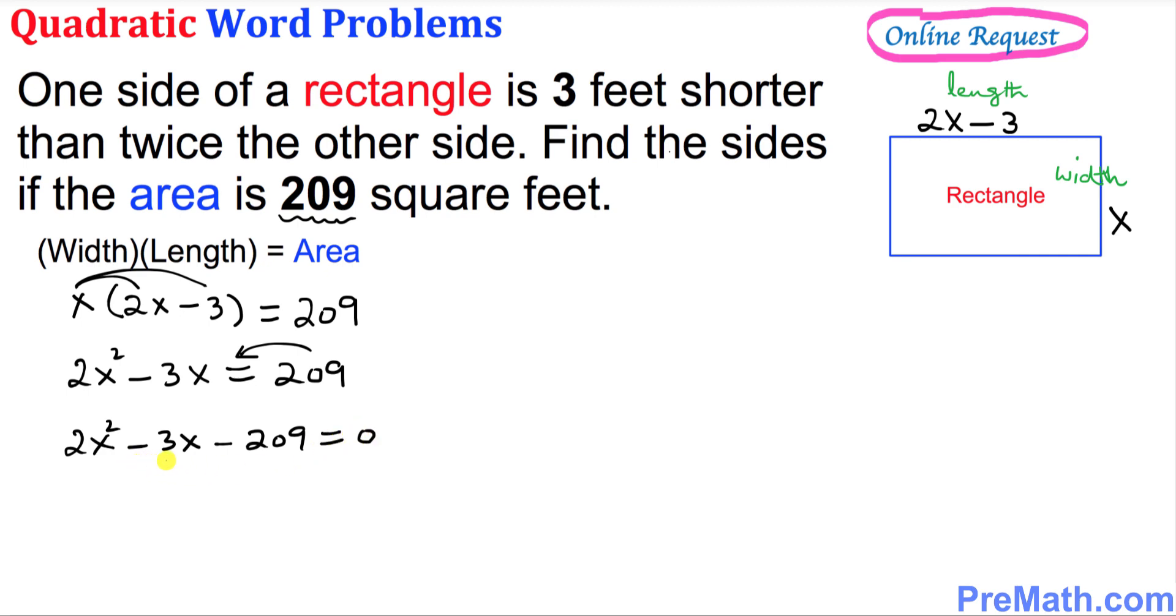Now as you can see this is a quadratic equation and we're going to solve for x by factoring method. I want you to put down two parentheses set equal to 0.